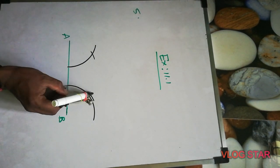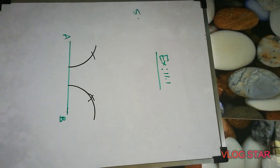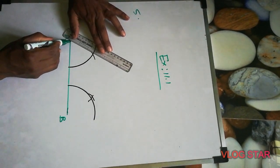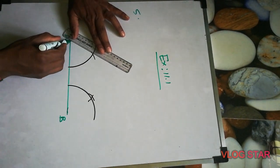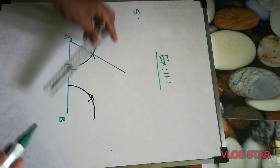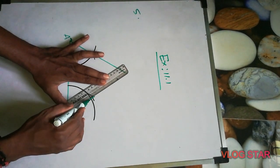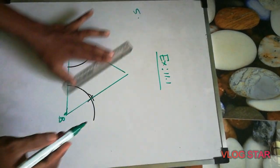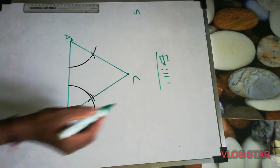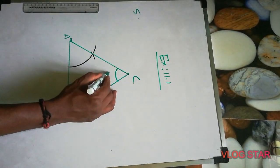Again you cut it — that is 60 degrees from point B as well. Then we'll just join the two intersection points to form the triangle.